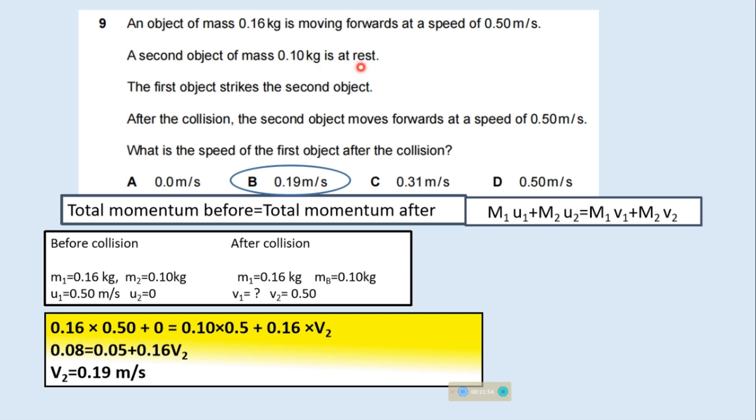An object of mass 0.16 kg is moving forwards at a speed of 0.50 m per second. A second object of mass 0.10 kg is at rest. The first object strikes the second object. After the collision the second object moves forward at a speed of 0.50 m per second. What is the speed of the first object after collision? Total momentum before collision equals total momentum after collision. This is the law of conservation of momentum.